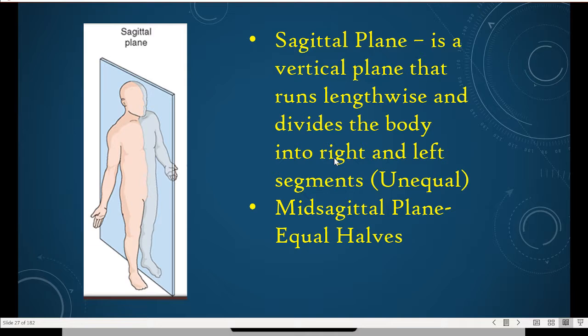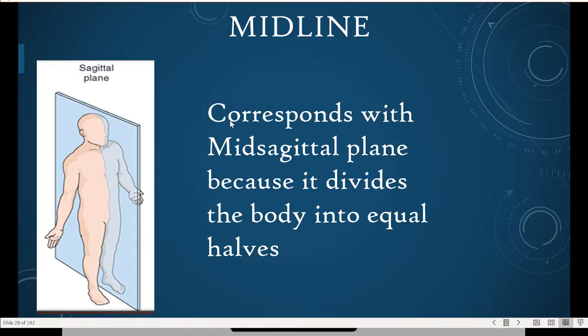We talked about the planes. The sagittal plane is a vertical plane that separates right and left halves; a sagittal plane can be an unequal section, while the mid-sagittal plane is equal. These are used for imaging like CT scans and X-rays. The mid-sagittal plane corresponds with that imaginary midline — you can clearly see that line in the picture.